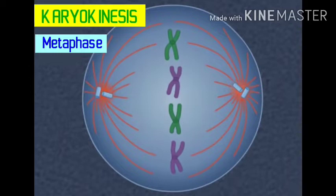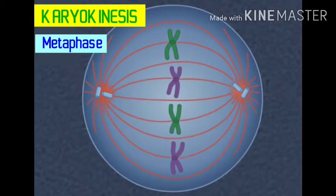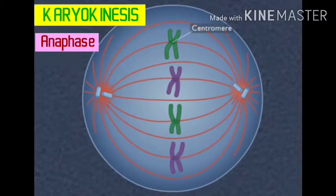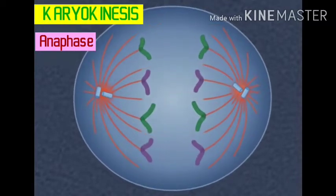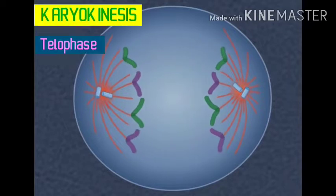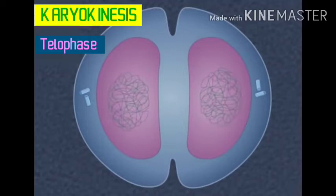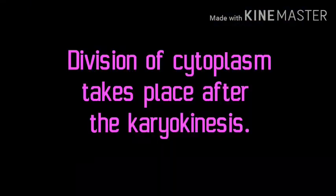During metaphase, chromosomes are aligned linearly at the center of the cell. During anaphase, chromosomes split at the region of the centromere and move towards opposite poles. During telophase, the daughter chromosomes cluster together to form chromatin reticulum. When karyokinesis is completed, two daughter nuclei are formed in the mother cell.